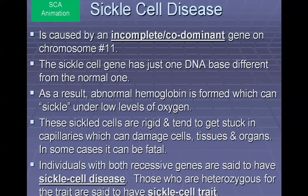People with sickle cell generally get attacks or have pain when exercising, since that's when oxygen levels drop, so many people with sickle cell cannot exercise properly. The sickle cells form a crescent shape when they form, so they get stuck on one another and in tissues and organs, and it can be fatal. Those who are homozygous are said to have the disease, while those who are heterozygous are said to have the sickle cell trait.